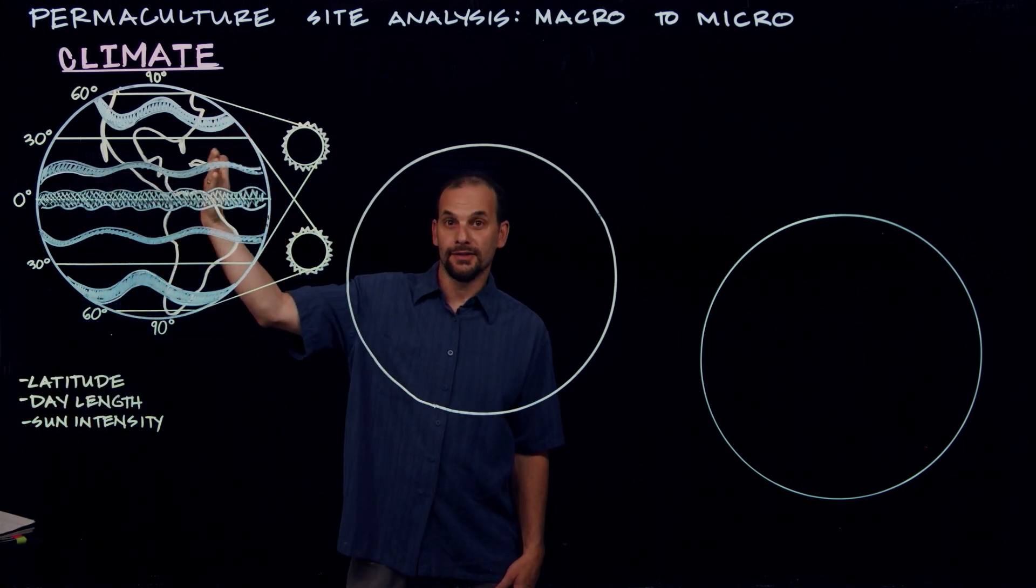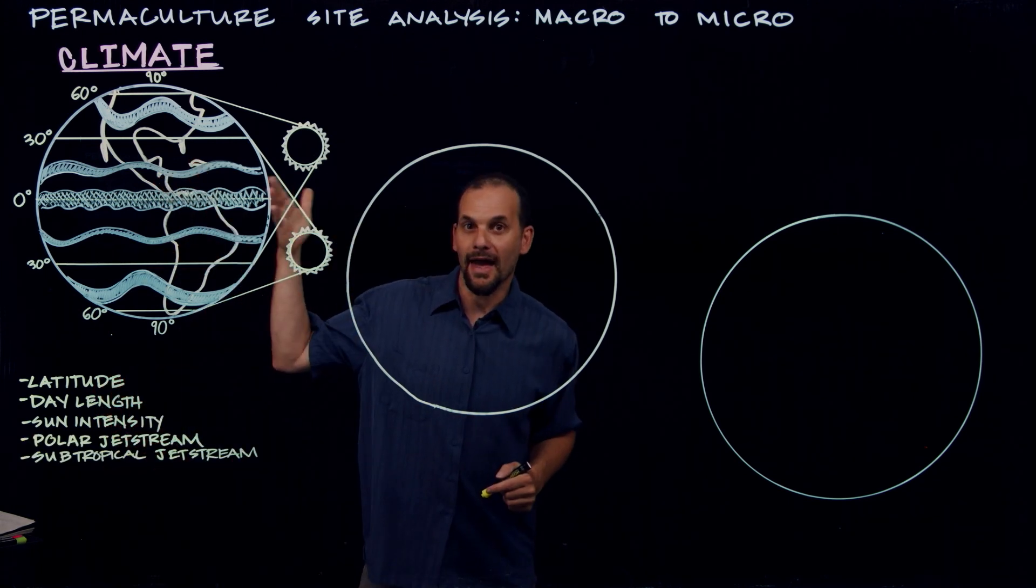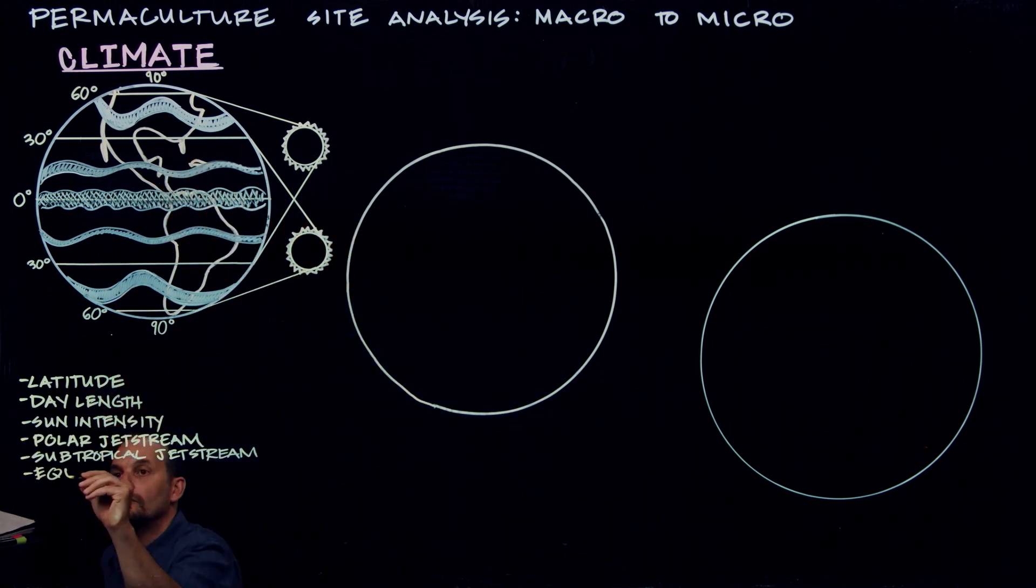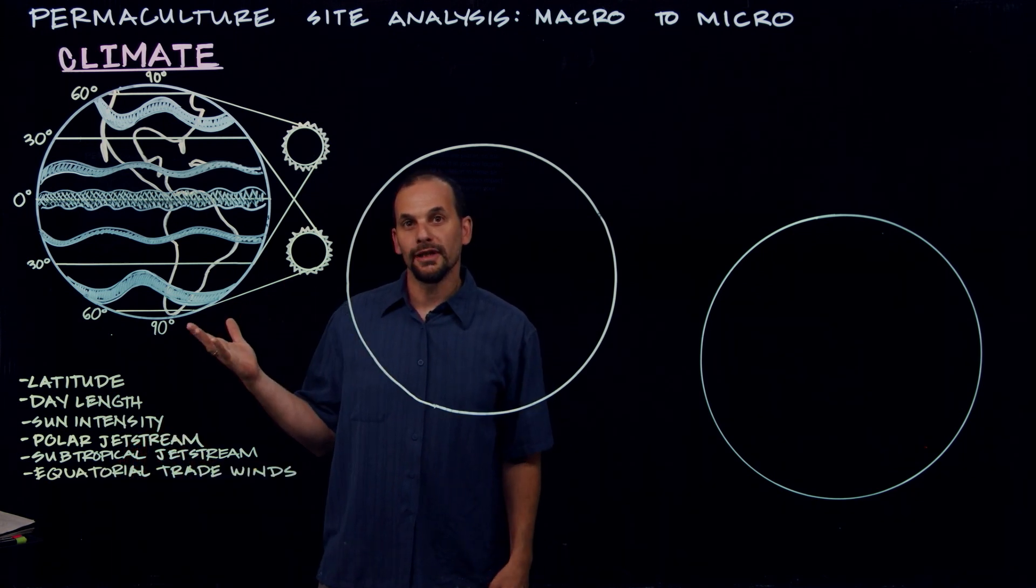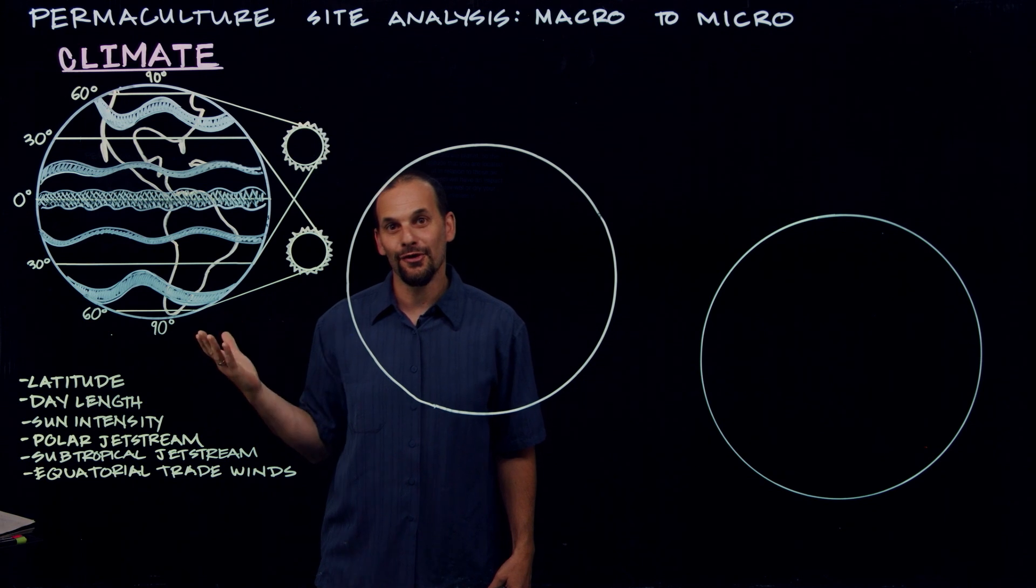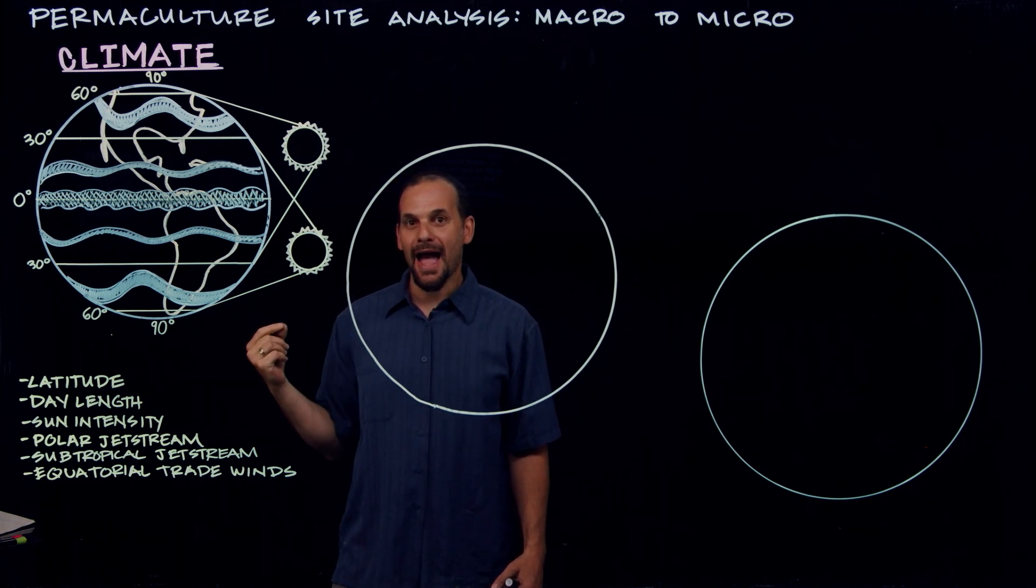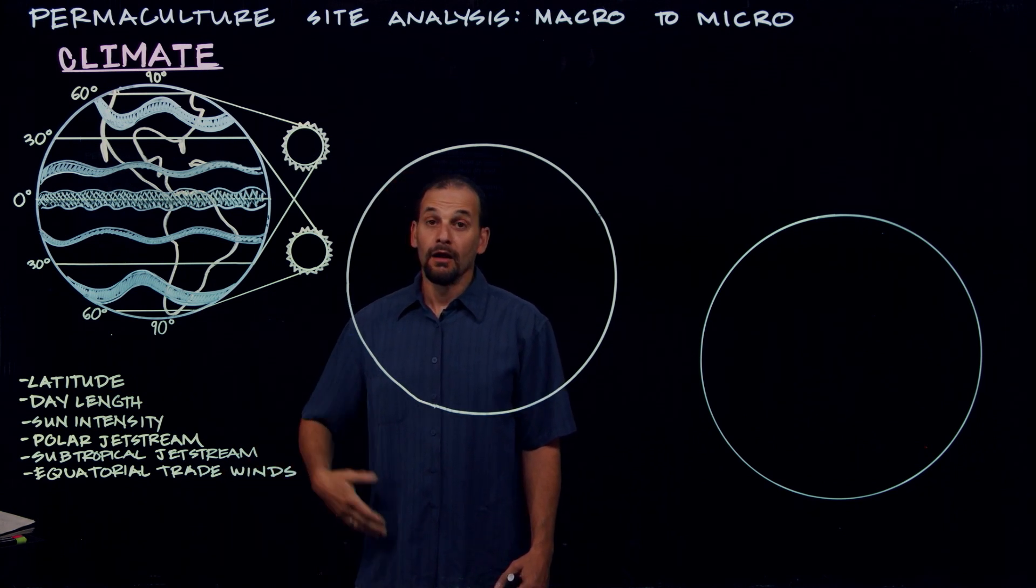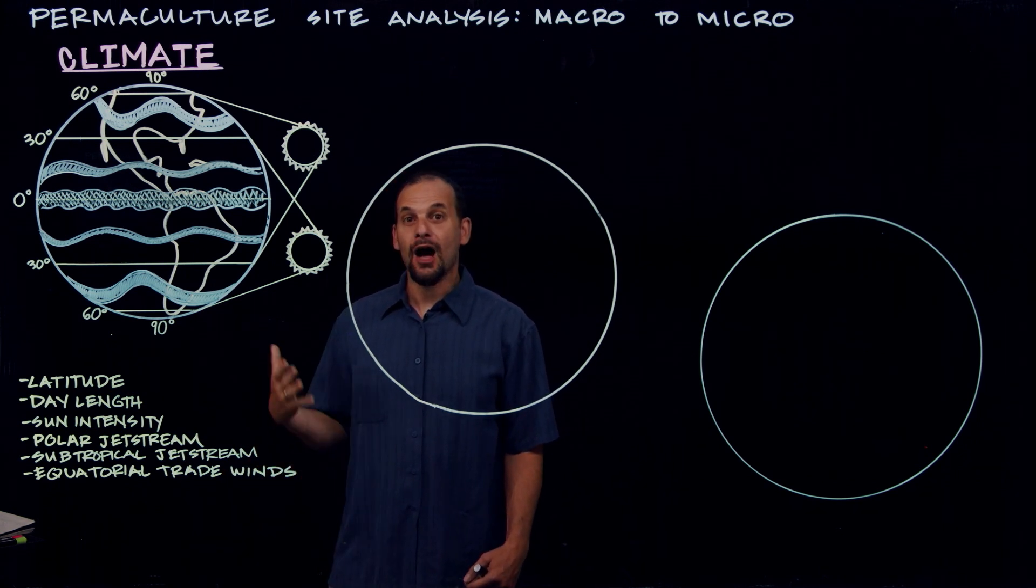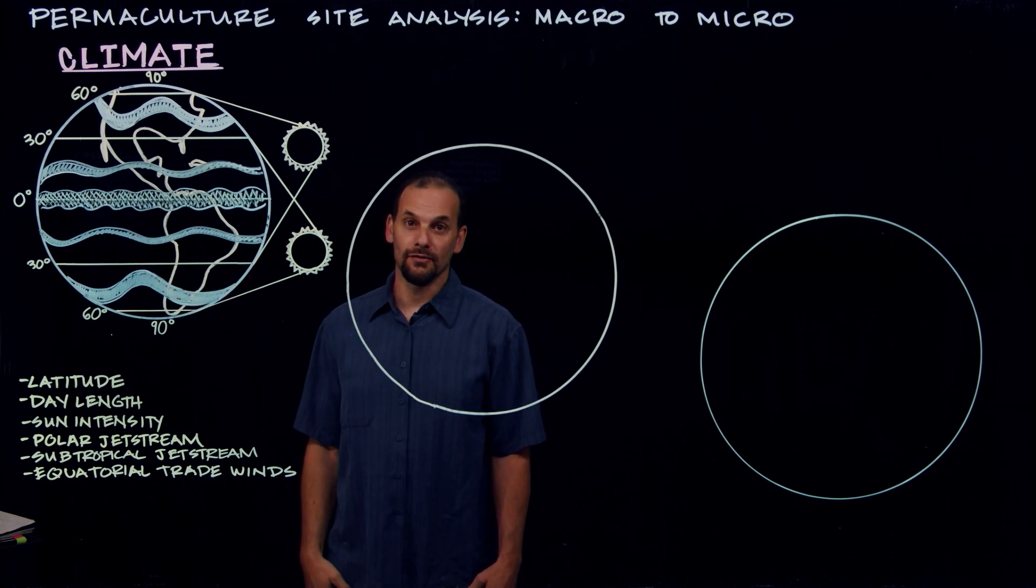There are the polar and subtropical jet streams and the equatorial trade winds, which all circulate moisture around the planet. The latitude that you're located at in relation to those air currents will have an impact on how wet or dry your climate is. Another really important element is how close or near you are to oceans or large bodies of water.